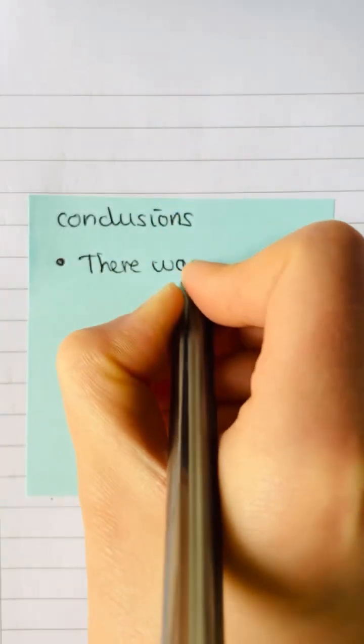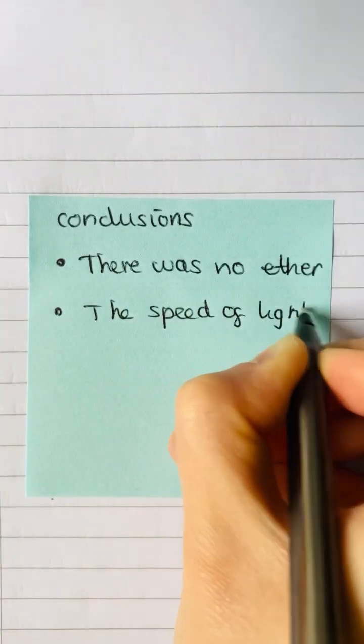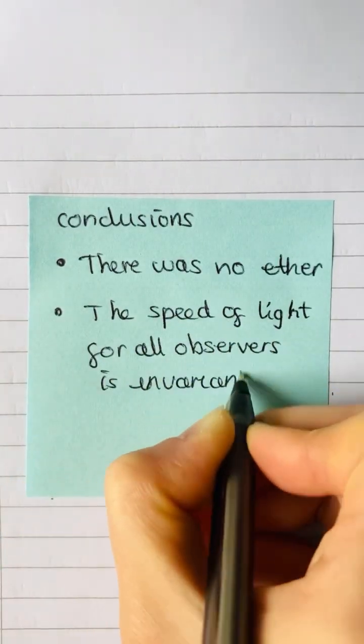So, they concluded that there was no ether and the speed of light in free space was invariant for all observers.